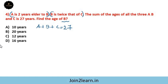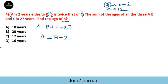A is 2 years elder to B, so A is equal to B plus 2. B is twice that of C, so B is equal to 2 times C. We need to find the age of B. Substitute: replace A with B plus 2, and since B equals 2C, C equals B divided by 2.